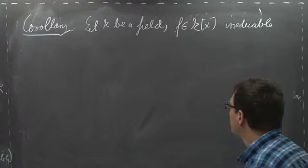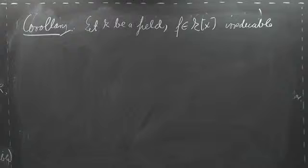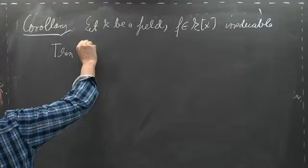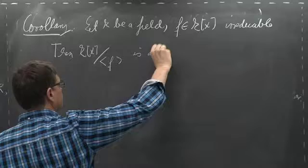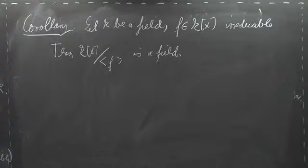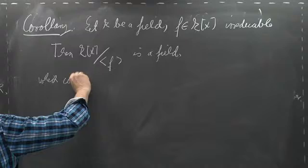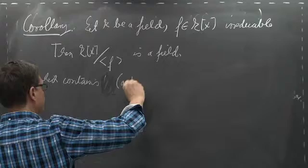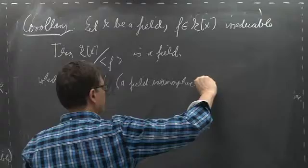Then the ideal generated by F is a maximal ideal, so K[x] modulo the ideal generated by F is a field. We can view it as a field containing K as a subfield — more strictly, containing a subring isomorphic to K.